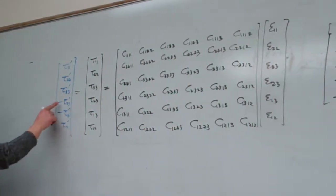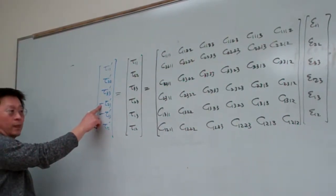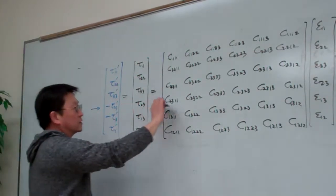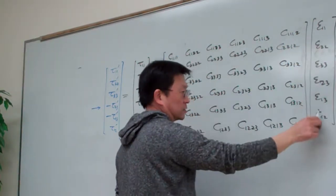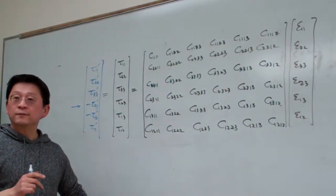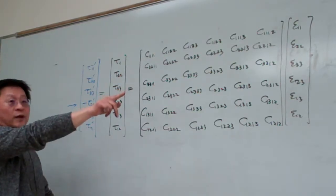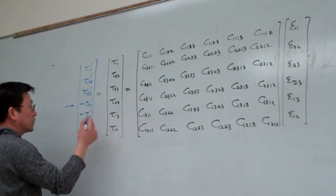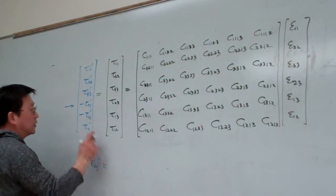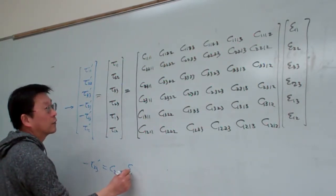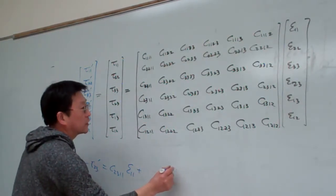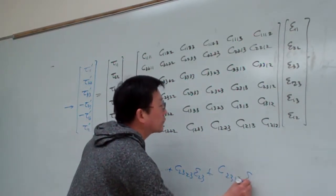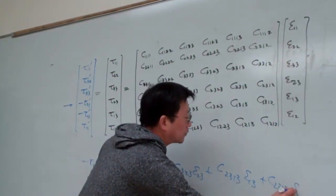Now my job is I want to have this minus — for this row, I multiply this row. This row represents this element, multiplying the six elements, which represents one linear equation. I simply want this minus to go to the right-hand side of this equation. So basically this row — let me implement it. Minus 2-3 prime in scratch basically equals C 2-3 1-1 epsilon 1-1 plus something plus C 2-3 2-3 epsilon 2-3, plus C 2-3 1-3 epsilon 1-3, plus C 2-3 1-2 epsilon 1-2 — something like this.